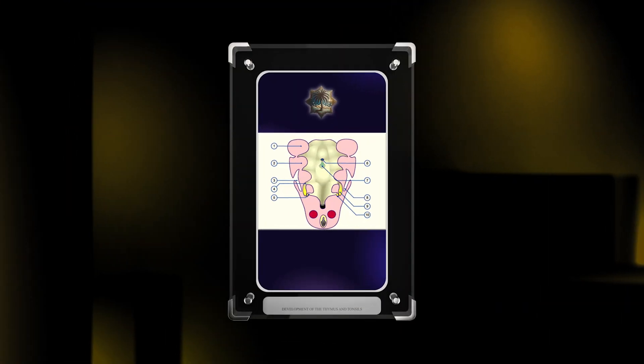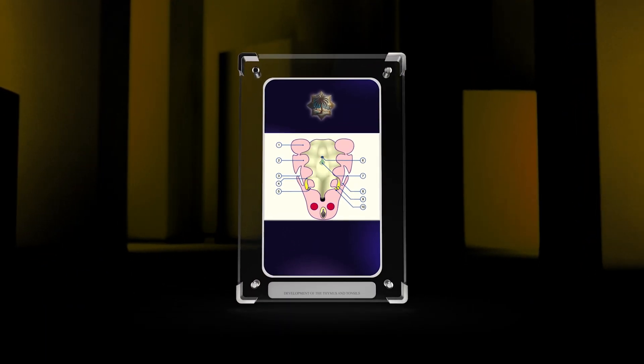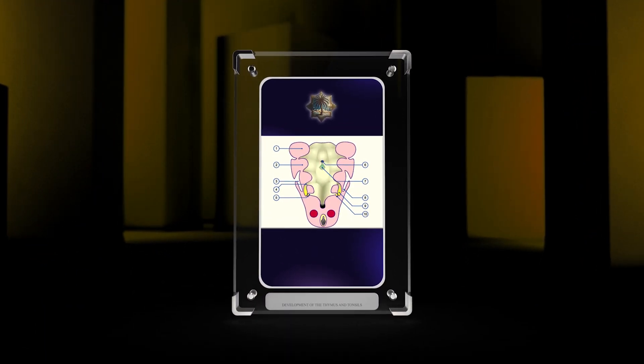We will also cover thymocyte development and selection, formation of tonsillar structures, and the contribution of neural crest cells. Finally, we will touch upon congenital anomalies and their clinical significance.